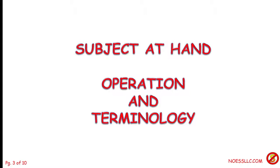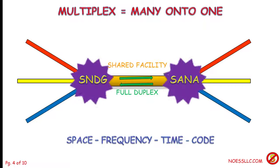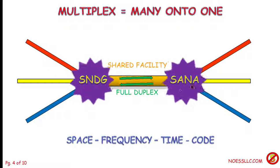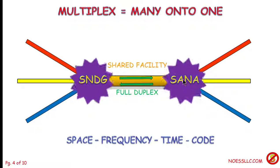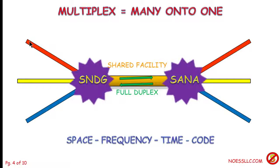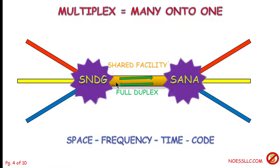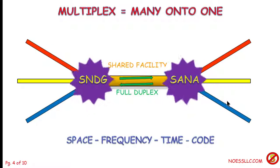Multiplexing — what does that mean? It just means many onto one. You put many conversations onto one transmission facility. Here, this is a shorthand for San Diego and this is Santa Ana. I've got three information streams being generated out here by a phone or a computer, and I can bring them together inside some equipment in San Diego and put them all on the same shared facility, taking them all the way up to Santa Ana where I split them back out again into individual streams.